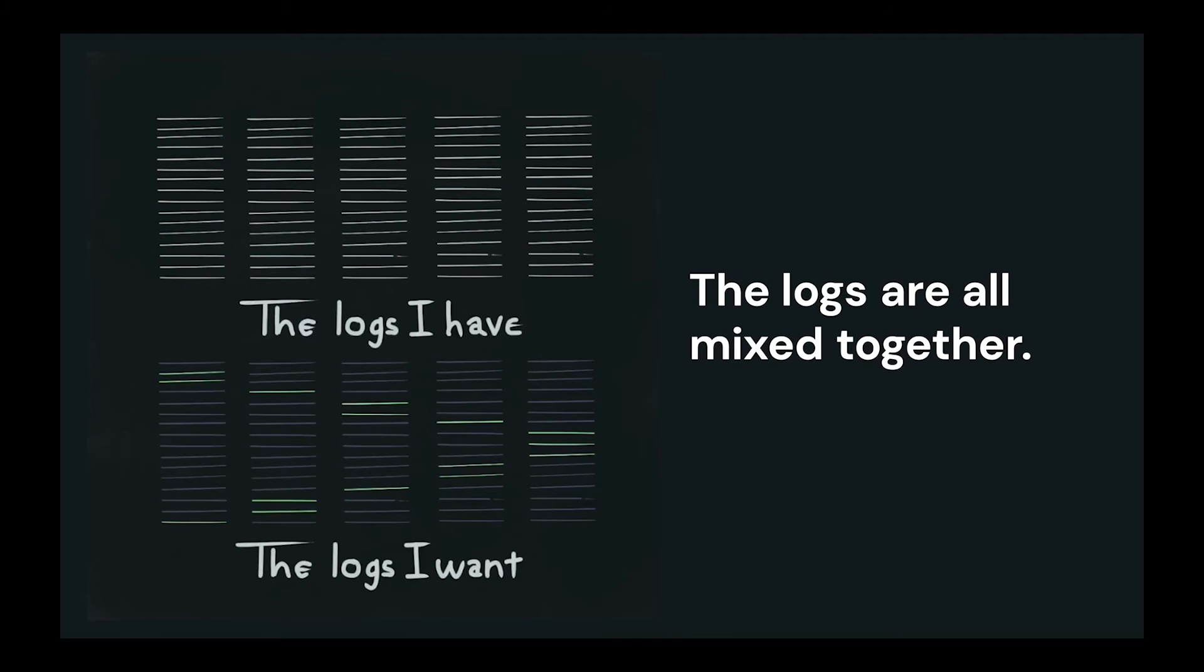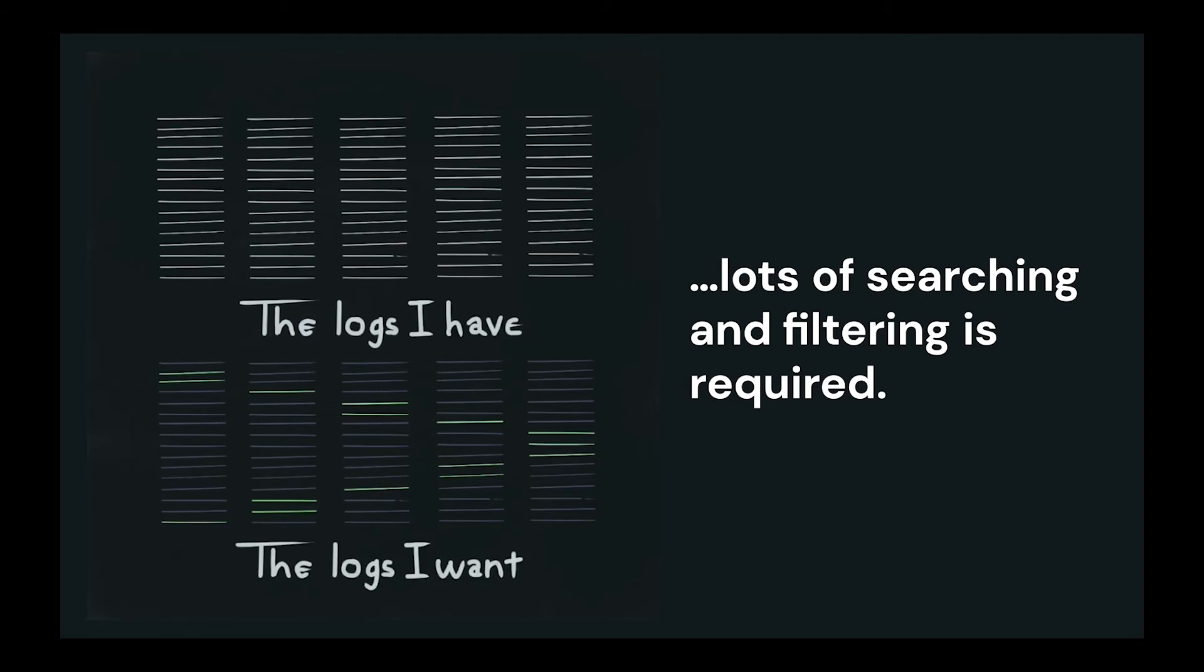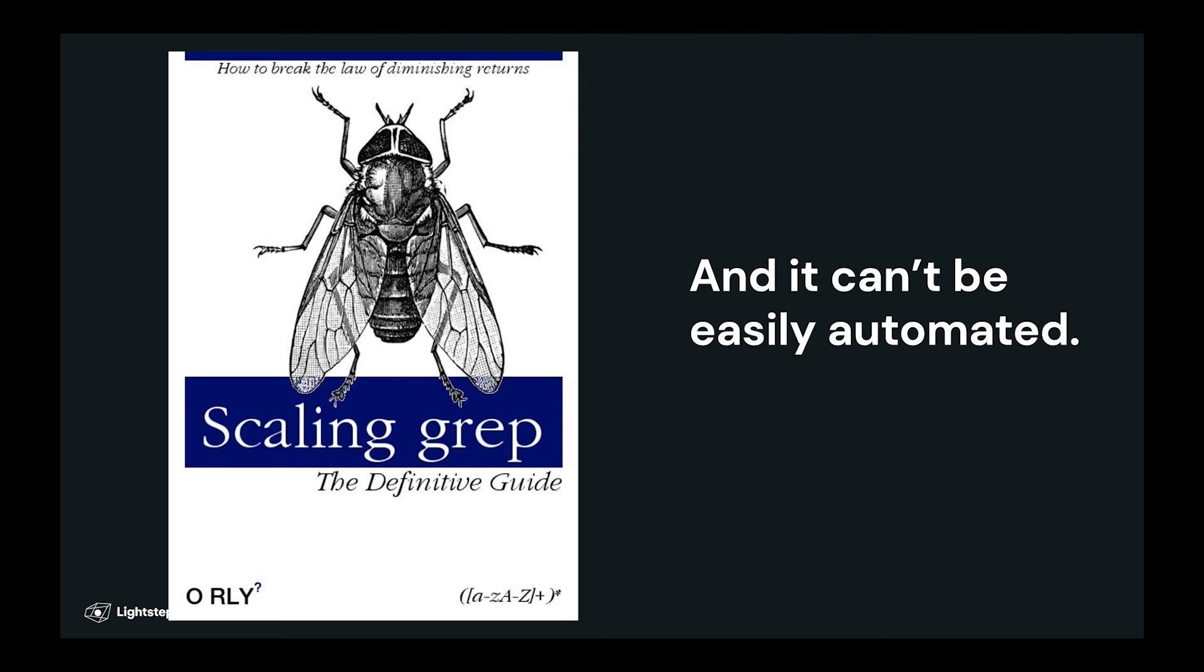You have lots and lots of logs and the bigger your system gets, the more spread out the logs in that one particular transaction become. So it becomes harder and harder to find them. If you don't have this context, the way you reconstruct this transaction is by doing a ton of filtering and searching. And none of that filtering and searching can be easily automated because you haven't indexed these events properly.